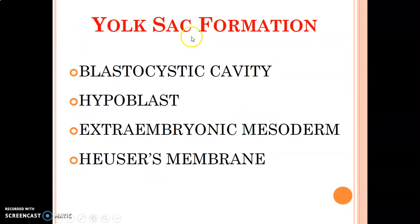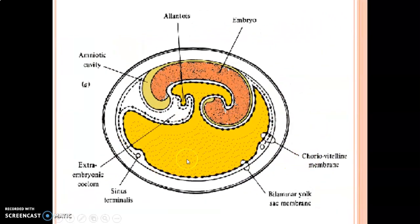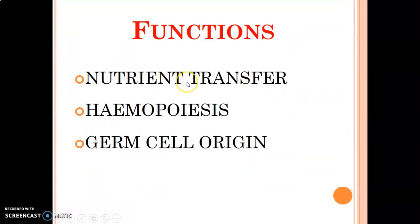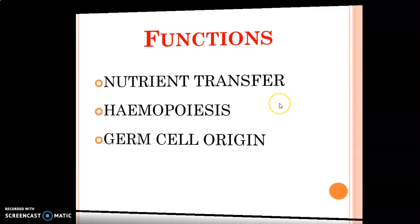The yolk sac is formed from the blastocystic cavity from the hypoblastic cells, which are cuboidal. It also forms the extraembryonic mesoderm. The yolk sac membrane is called Heuser's membrane. Functions of the yolk sac include: transferring nutrients to the developing fetus, helping in blood development, and serving as the origin for germ cells — sperms and ova originate from the yolk sac.